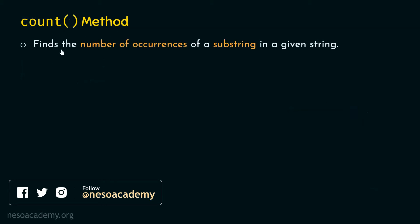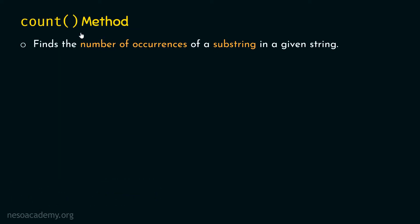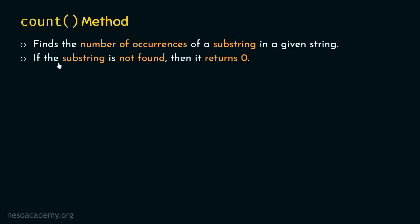The count method finds the number of occurrences of a substring in a given string. Count method is applied on a string, and then we need to pass the substring to the count method. The job of count method is to find the number of occurrences of that substring within the given string. If the substring is not found, then it returns zero in that case.